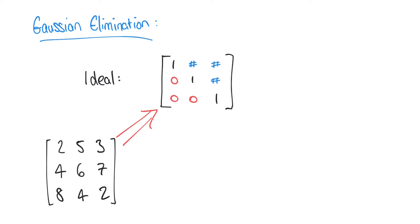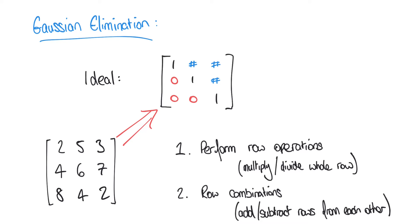And to do that we're allowed to do two things. We can perform row operations so we can multiply a whole row or divide a whole row by any number. The second thing we're allowed to do is row combinations so we could add one row to another row or subtract the values from one row from another row.